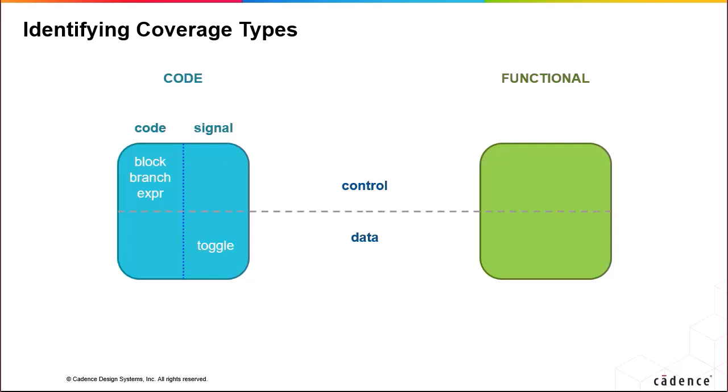Functional coverage items include, in the control domain, the conditions, sequences of conditions, and protocols that you define. And in the data domain, the variable or expression values that you define.